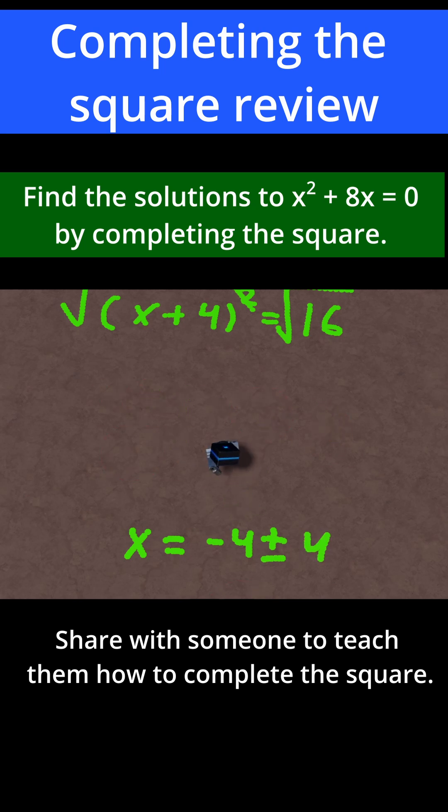Now let's find both solutions. We can take the plus solution and the minus solution. Minus 4 plus 4 is equal to 0. Minus 4 minus 4 is equal to minus 8. So these are our solutions.